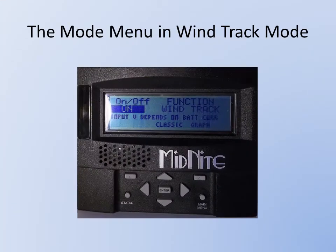Now we're in the function, and this may be set for wind track already if you did the factory restore or on initial power-up. If not, use the right arrow on this screen to go over to the function, and use the up and down arrow to locate wind track. Once you've located wind track, you'll notice it says Graph down in the bottom right corner. Use the upper right button, or the soft key, and that will take you to the wind graph.